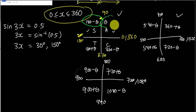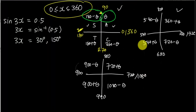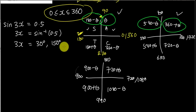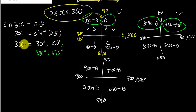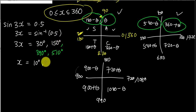In this case we want the first two quadrants, so when we rotate the second round we take the same quadrants again. That gives two more answers: 360 plus 30 equals 390, and 540 minus 30 equals 510. Now, all these answers have to be divided by 3 because we're solving for x, not 3x. So: 30 divided by 3 is 10, 150 divided by 3 is 50, 390 divided by 3 is 130, and 510 divided by 3 is 170.